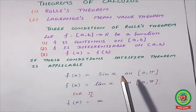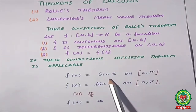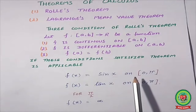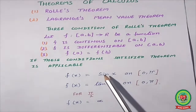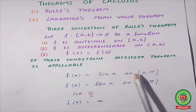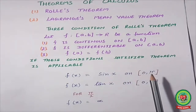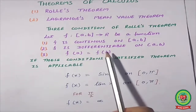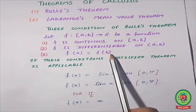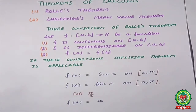After differentiation, in between 0 and π, the derivative of sin x is cos x, so an answer also exists. And sin(0) = 0 and sin(π) = 0, so the third condition is also satisfied. It means Rolle's Theorem is applicable for f(x) = sin x on [0, π].